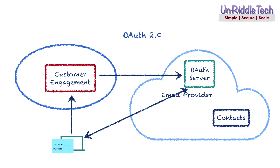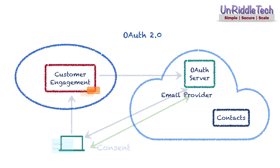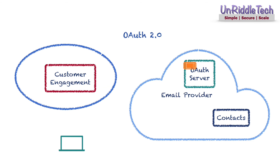The authentication process itself is outside the scope of OAuth. After successful authentication, the OAuth server asks the user for consent — to confirm whether the user agrees to provide the application access to read email contacts. If the user provides consent, the OAuth server provides an authorization code to the application via the user's browser. The application then sends the authorization code to the OAuth server along with its client ID and secret.